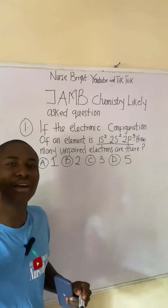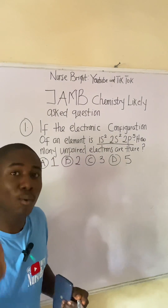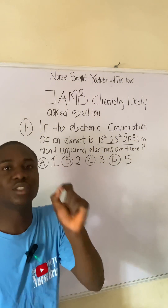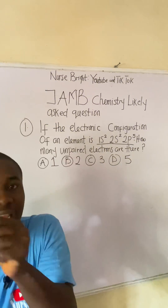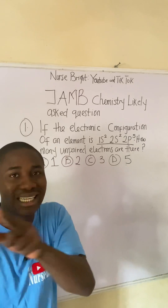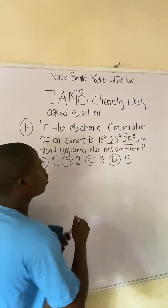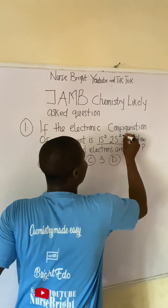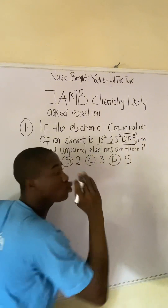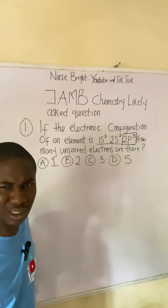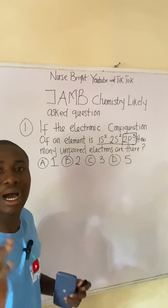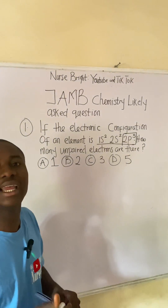What you must look out for is the orbital that was written last in the electronic configuration. This is the last orbital they talked about here, and what is it? 2p⁵. Now I want to explain something to you — take note.